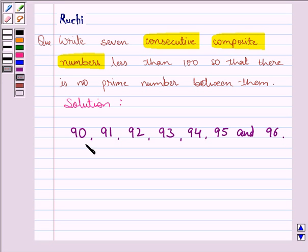These are the 7 consecutive composite numbers less than 100. This is the required answer. Hope you have enjoyed the session. Okay. Bye for now.